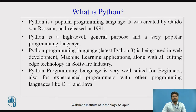So what is Python? Python is a popular programming language. It was created by Guido Van Rossum and released in 1991. Python is a high level, general purpose and very popular programming language. The latest Python version 3 is used in web development, machine learning applications, IoT applications, along with all cutting edge technology in the software industry. Python is very well suited for beginners, as well as experienced programmers with other programming languages like C++ and Java.